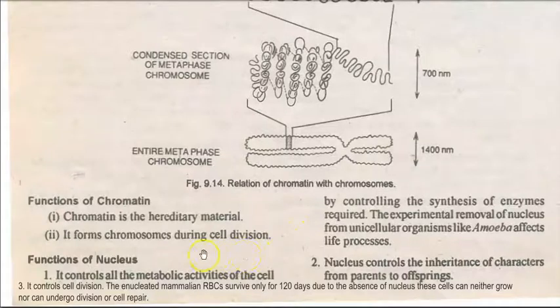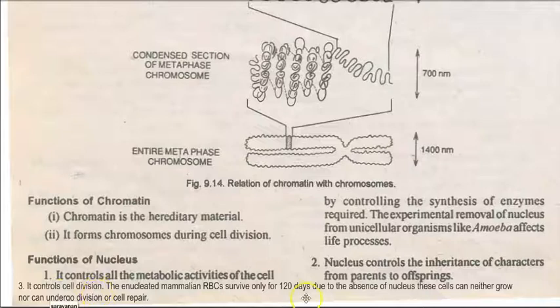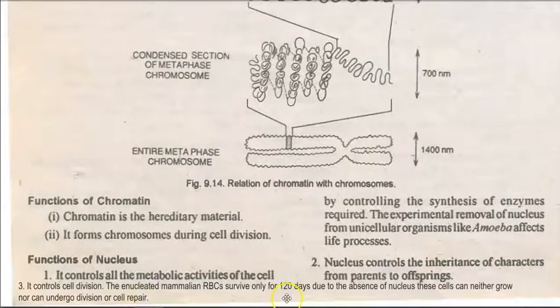Next, the functions of the nucleus: The nucleus controls all metabolic activities of the cell and controls the inheritance of characters from parents to offspring. It also controls cell division. Mammalian RBCs lack a nucleus, and as a result they cannot grow, divide, or undergo cell repair. This is why within a span of 120 days they die and are replaced with new RBC cells.